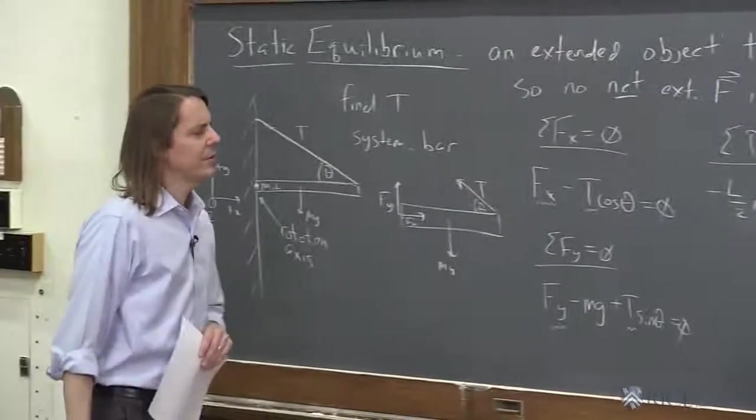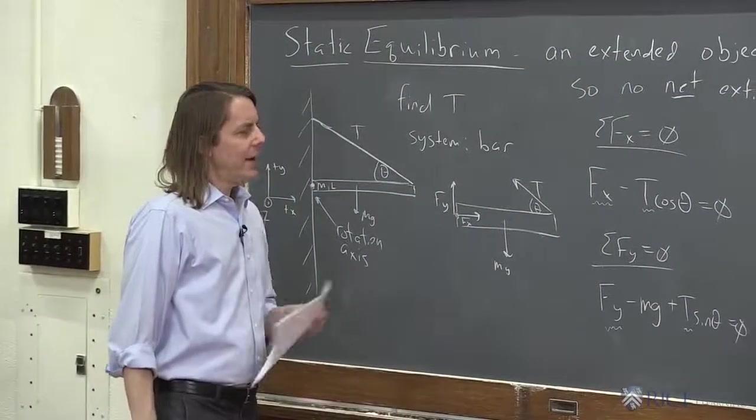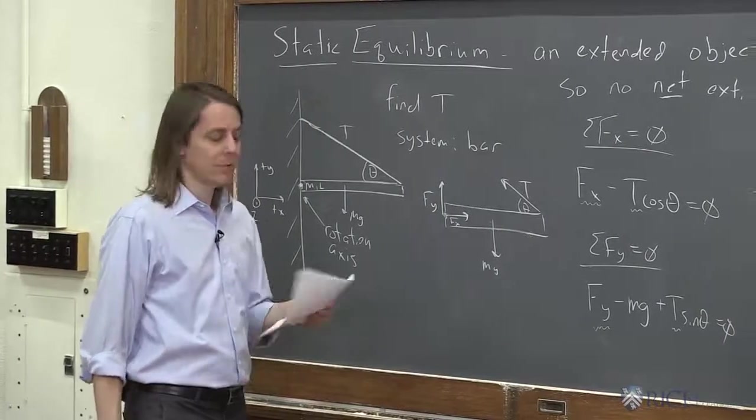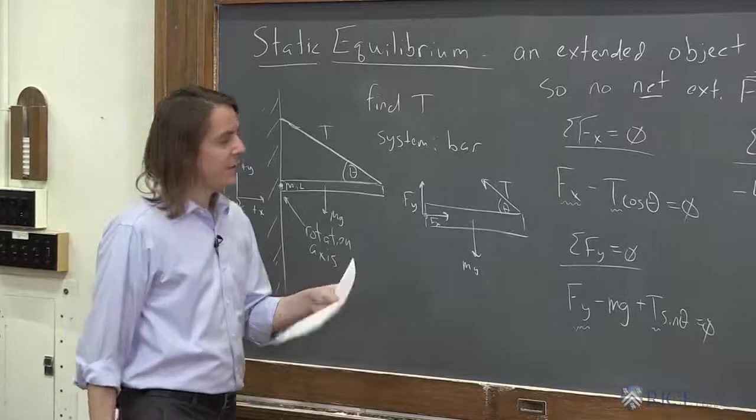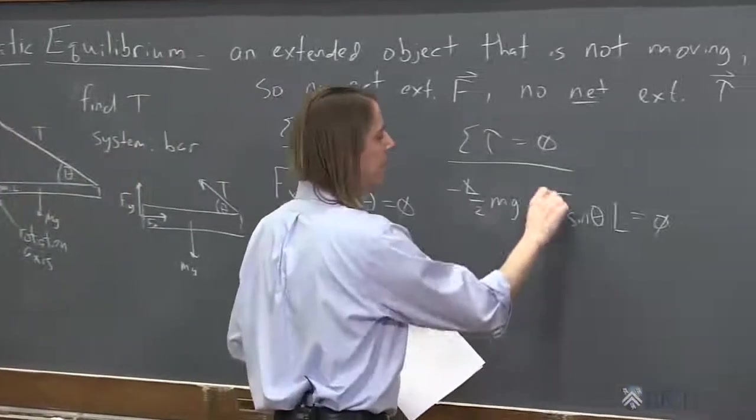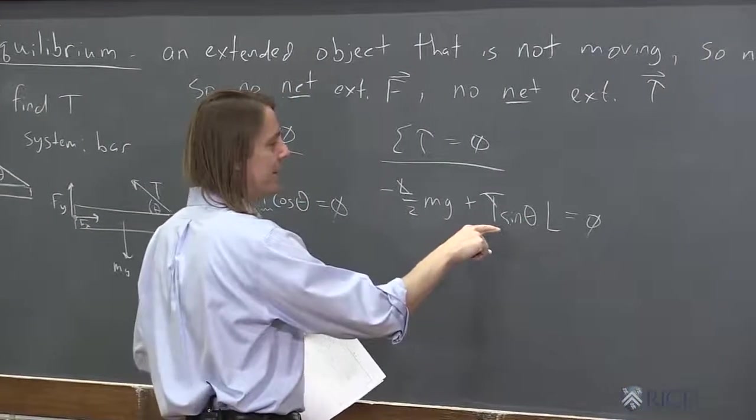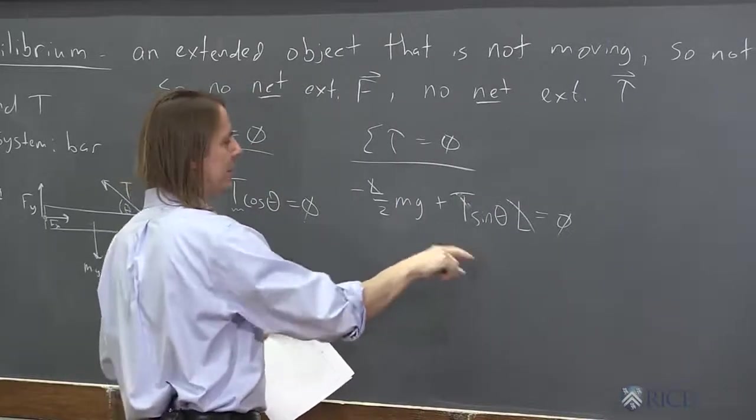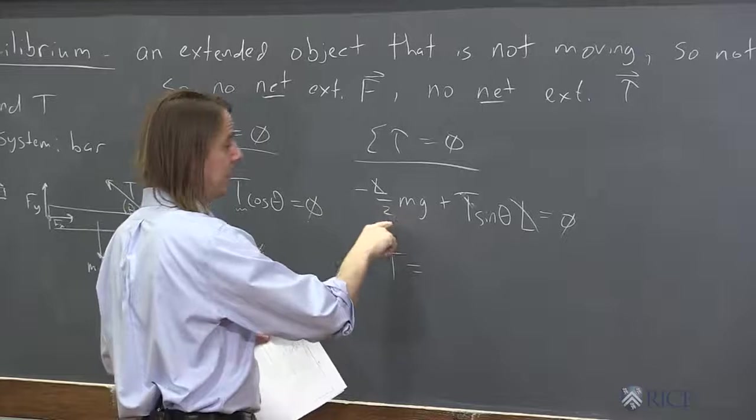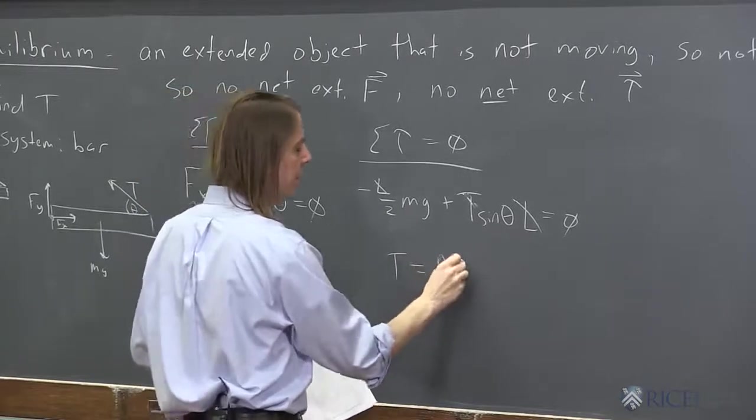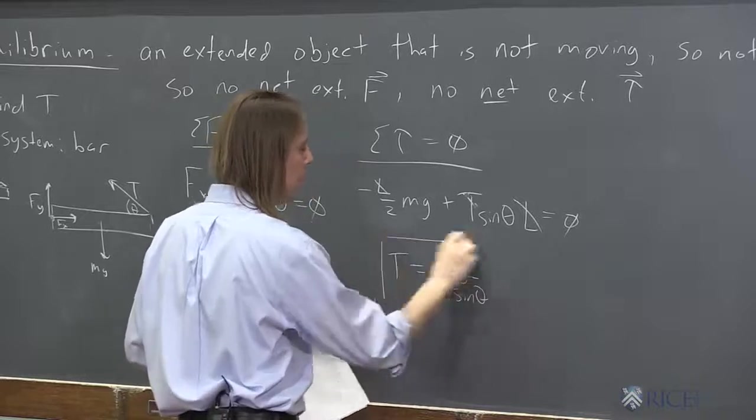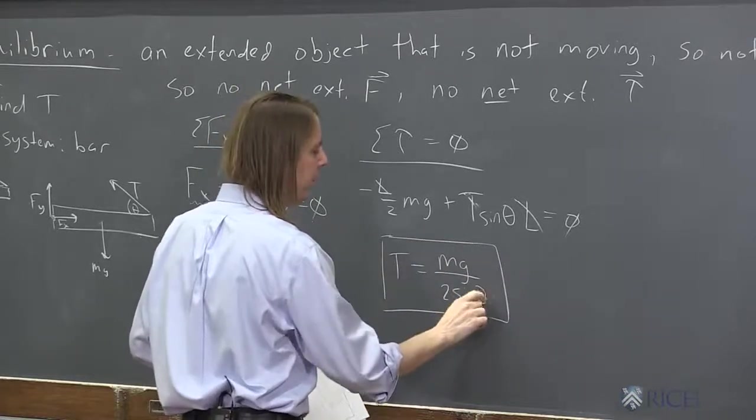Yes, okay. So you look at that, and that instantly gets you the answer for T. That's really all you wanted. Then you got T because the L's cancel here, and this comes over there, and you say, I'm sorry, the L's cancel. I put that on the wrong side. And you say T equals mg over 2 sine theta.